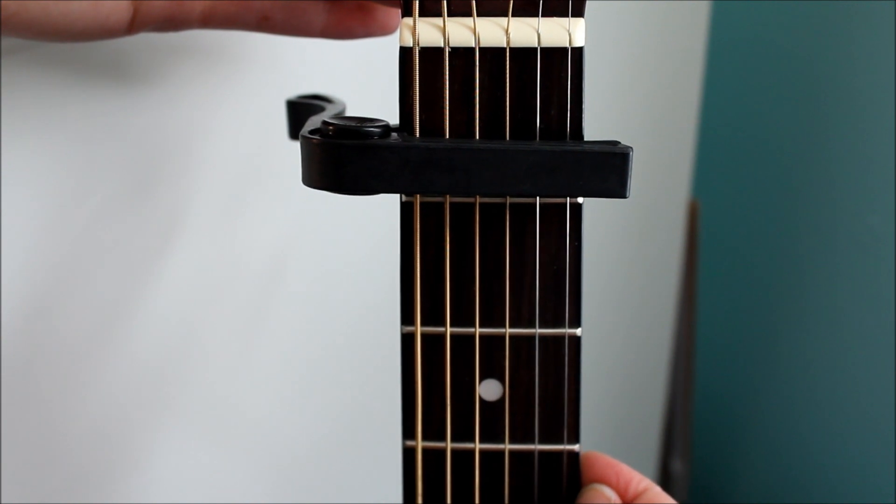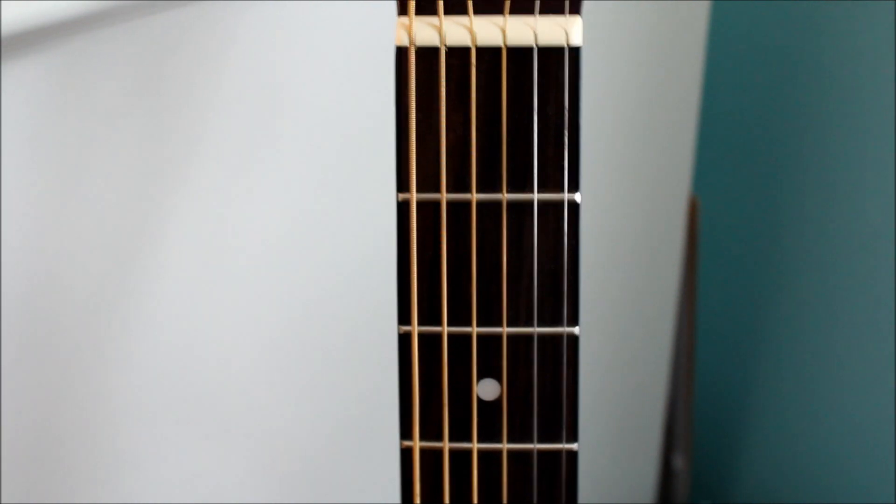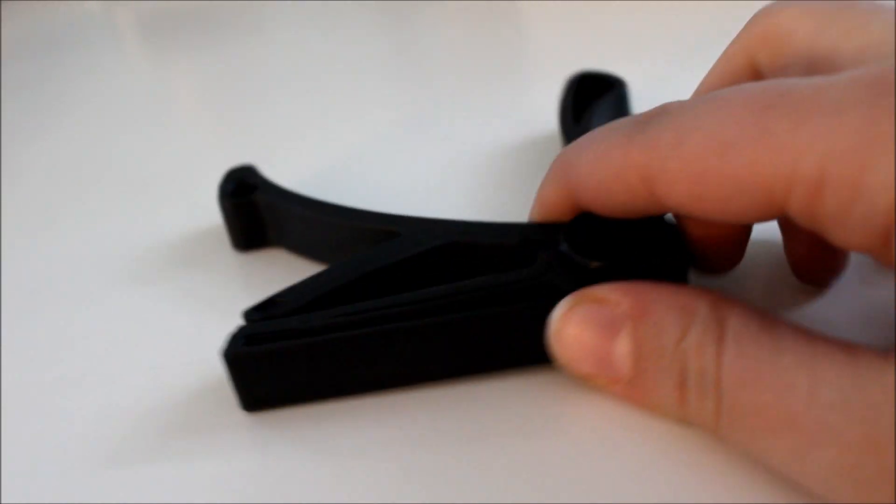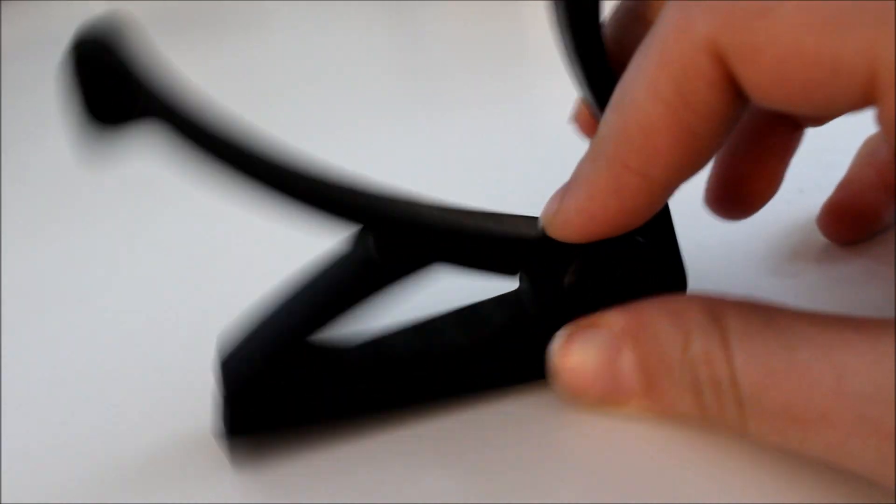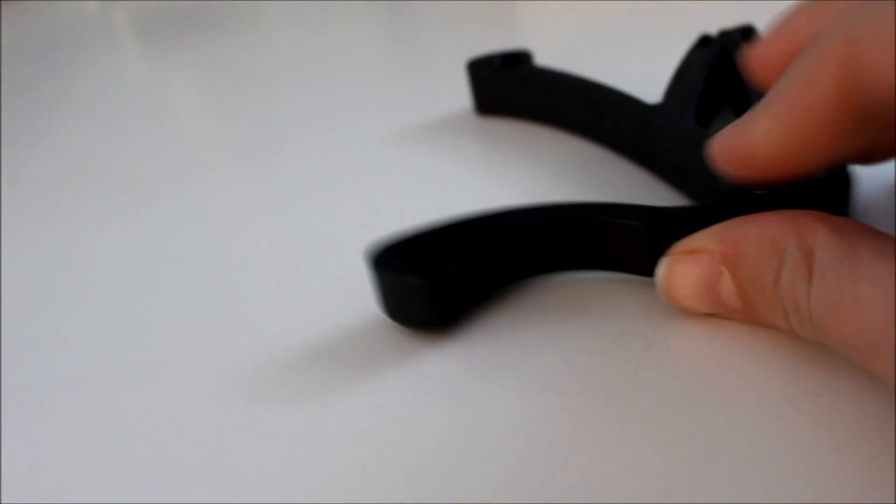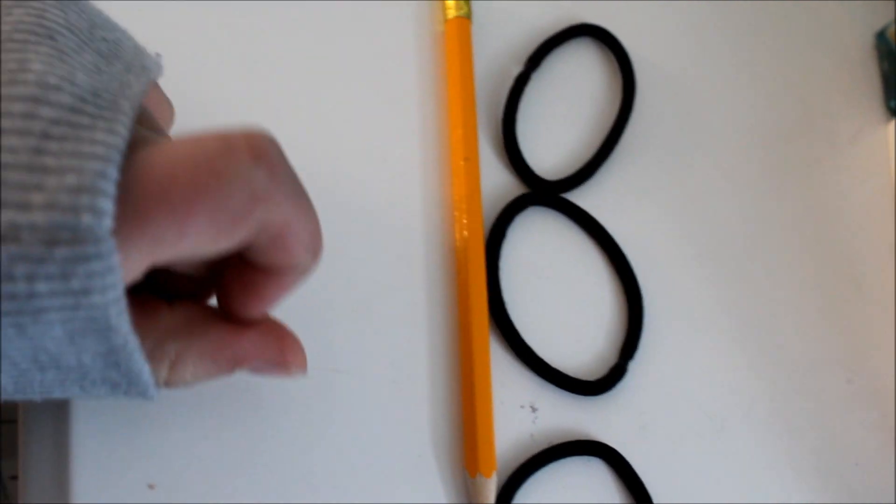I bought mine at Target and it was really cheap. I've had it for about a year now. But let's say I needed to perform and I lost my capo - I'm going to show you how to make a really quick one. What you need is a pencil and three elastics or rubber bands.